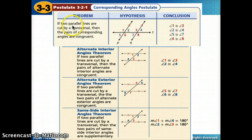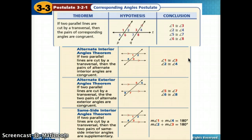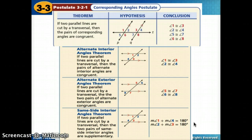We learned that if two parallel lines are cut by a transversal, then the corresponding angles are congruent — we had four sets of congruent angles from corresponding angles. Then the alternate interior angles theorem said that if two parallel lines are cut by a transversal, then the pairs of alternate interiors are congruent. Likewise for exteriors. And then we had same side interior angles: if two parallel lines are cut by a transversal, then the two pairs of same side interiors were supplementary.